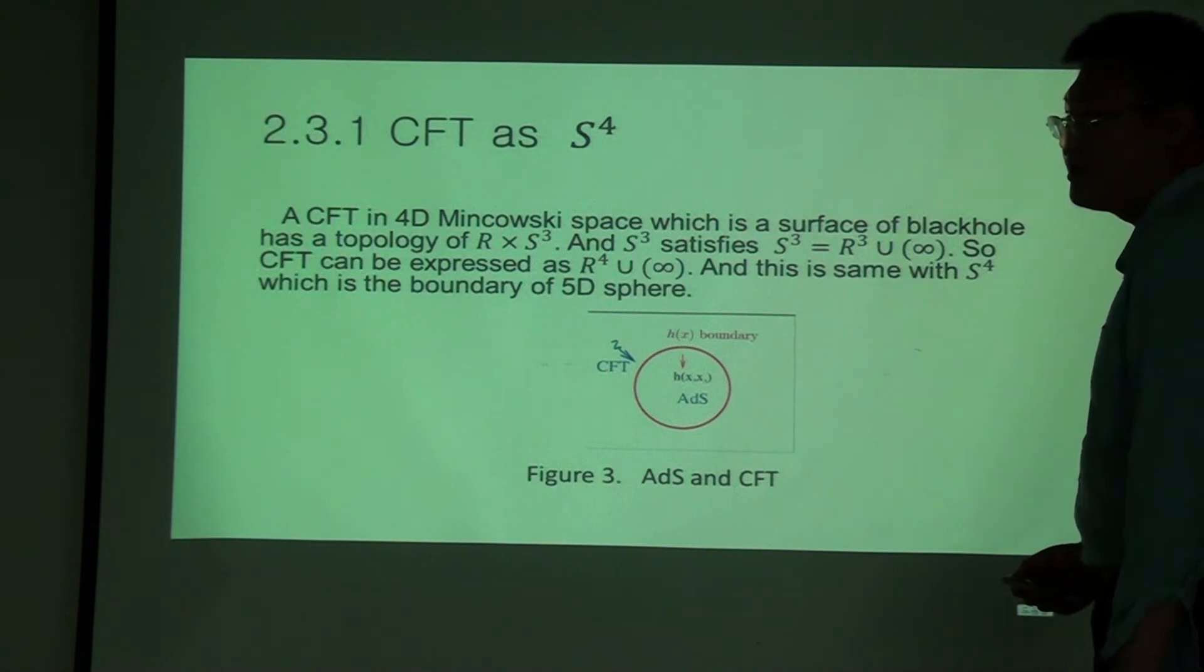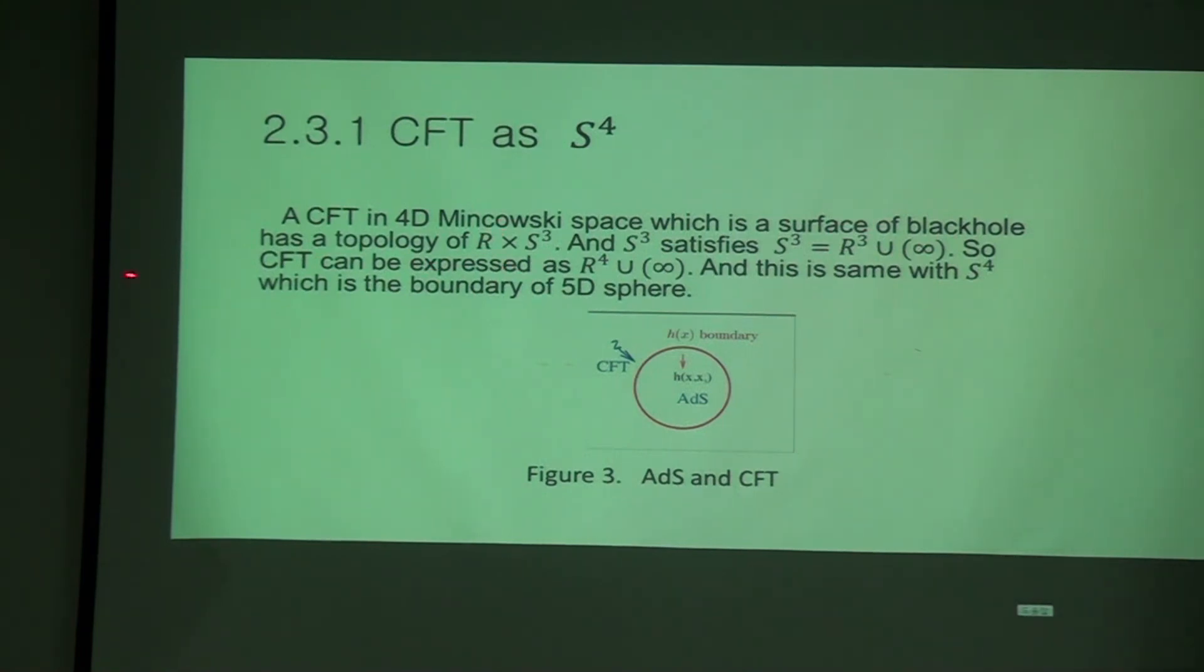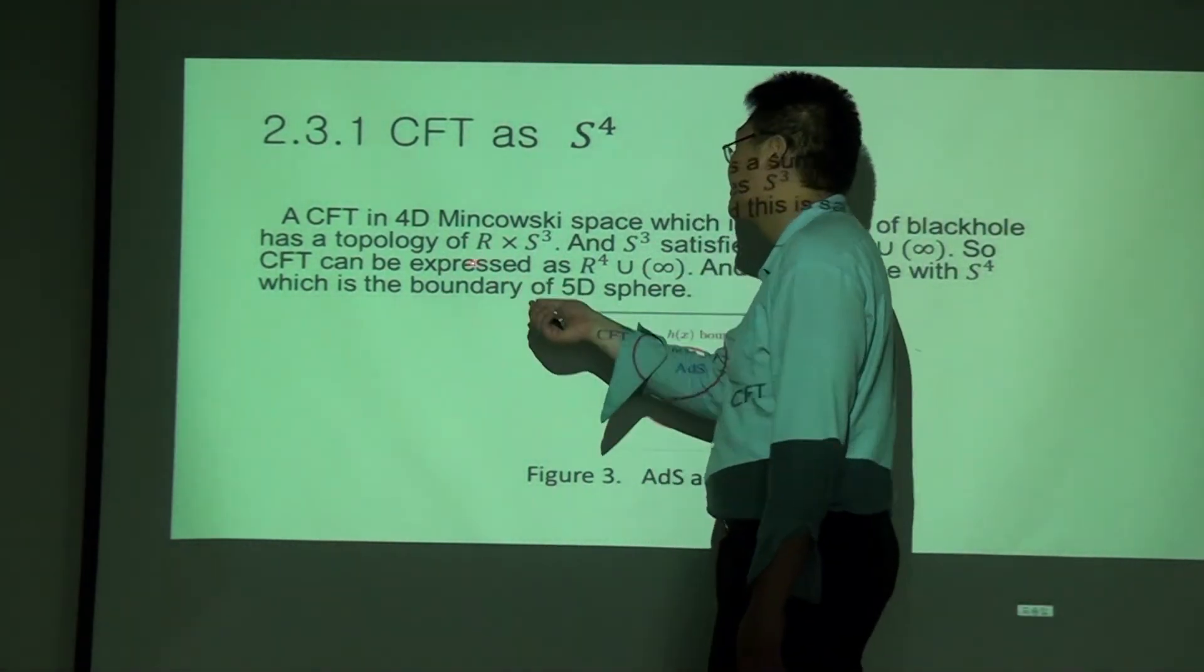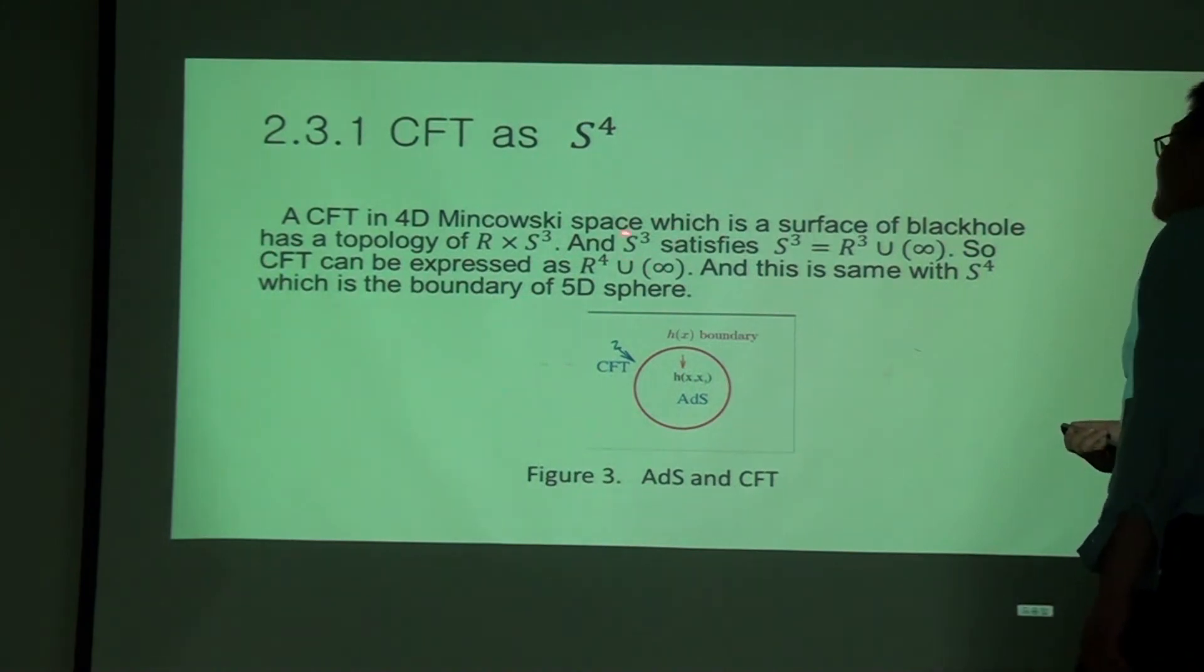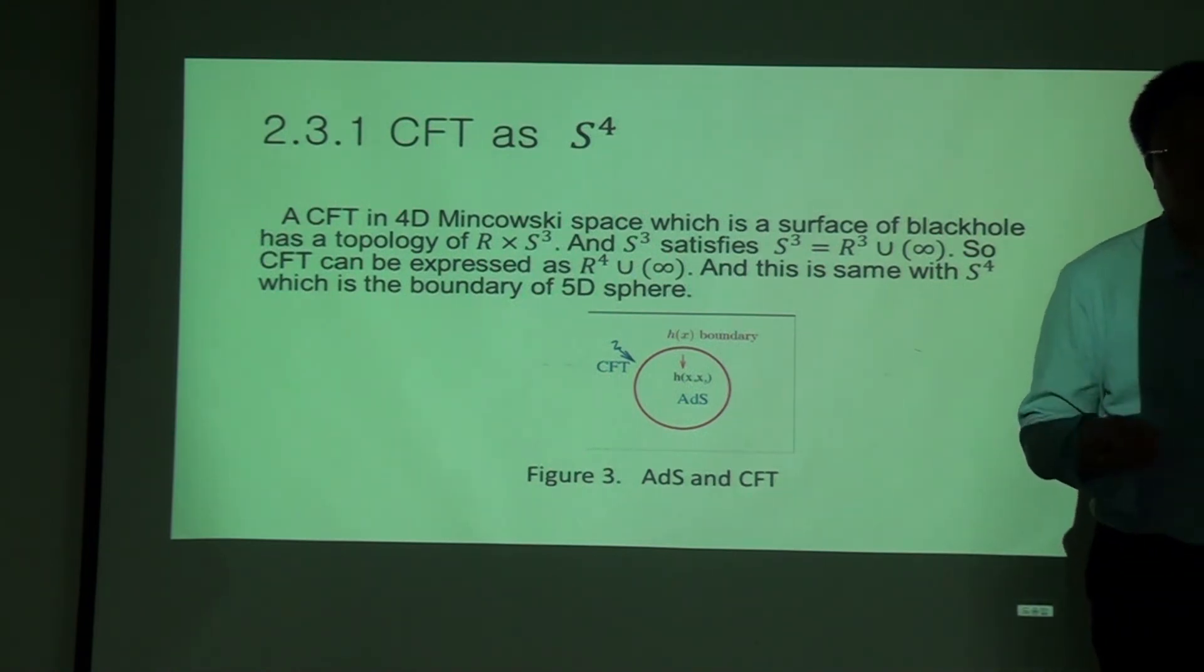It is already known that CFT should be same as R multiplied by S3. And you can put S3 as R times S3. So CFT should be R4 in the same way. And you can put that it is the same as S4. So the best example of S4 is CFT boundary.